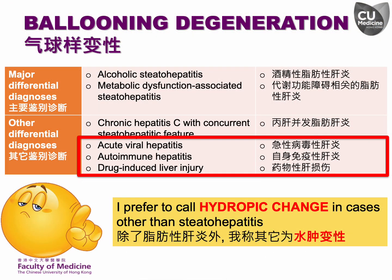Ballooning degeneration serves as the histological hallmark of steatohepatitis. Although similar morphological changes can be observed in hepatocytes affected by acute viral hepatitis, autoimmune hepatitis, and drug-induced liver injury, I prefer to designate them as hydropic changes because the swollen hepatocytes in these conditions do not exhibit a loss of their cytoplasmic expression of CK8/18. I reserve the term ballooning degeneration exclusively for describing steatohepatitis.